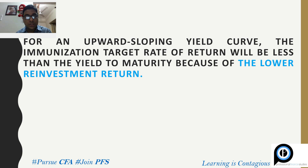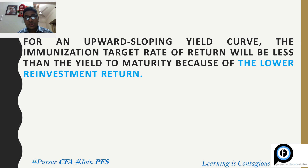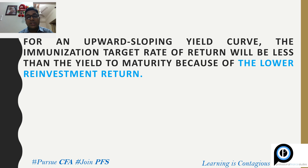One of our students doesn't understand why it's a lower reinvestment return. Their understanding is that since the yield curve is upward sloping, the reinvestment rate must be higher. So here is a misconception regarding yield to maturity and reinvestment rate, and whether yield to maturity is a good approximation of the expected rate of return of the portfolio.